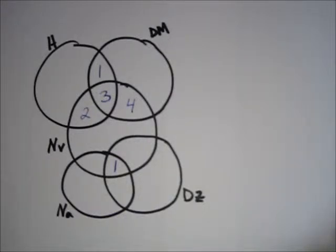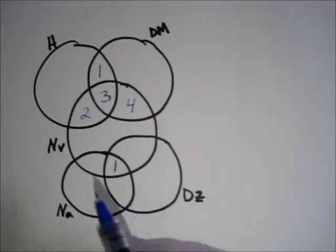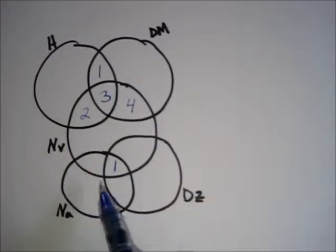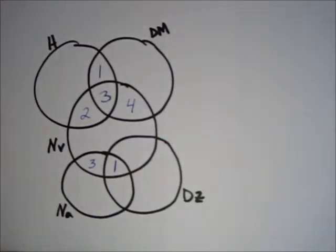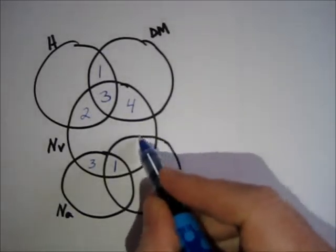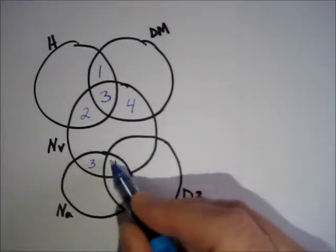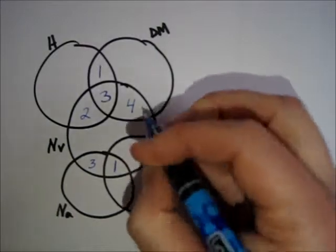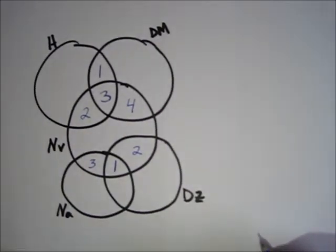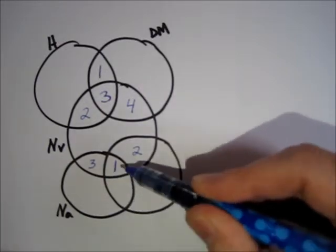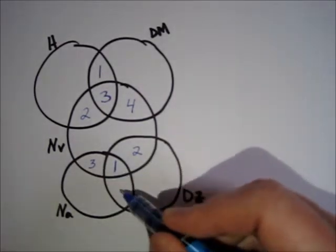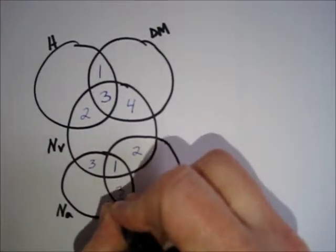Continuing up, four people experienced nervousness and nausea. We've got one there, which means we need three more for a total of four. Three people experienced nervousness and dizziness — we've used one there, so we put two in that region for a total of three. Above that, four people experienced nausea and dizziness — that intersection needs four people total. I've used one, so three go there.